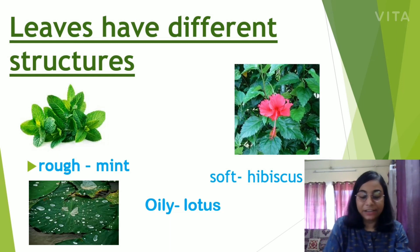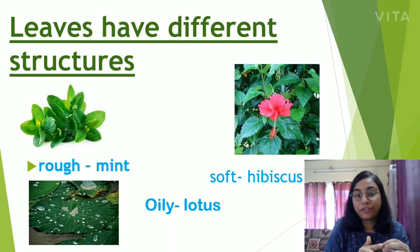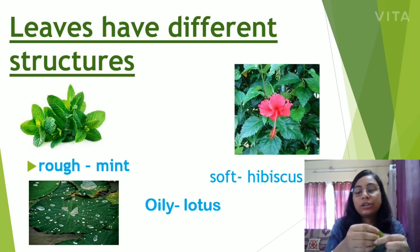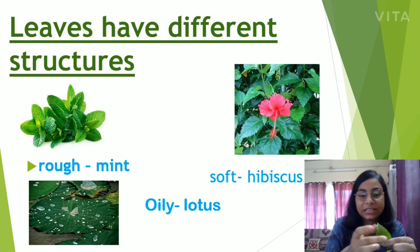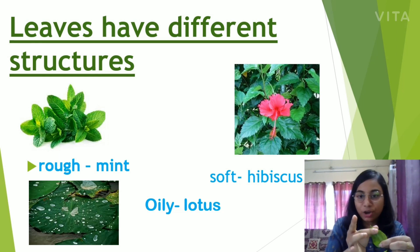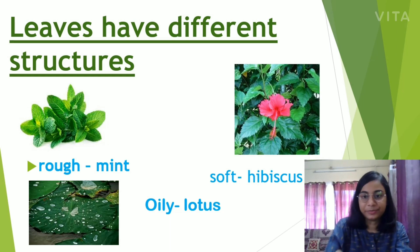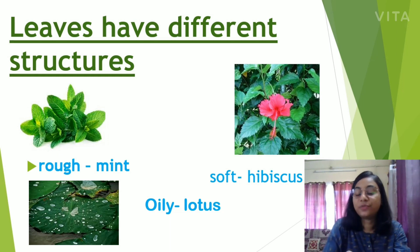The surface of a mint leaf is a bit rough compared to hibiscus leaves, which are very soft. But some leaves have a very rough surface — when we touch them, we can clearly feel the roughness.